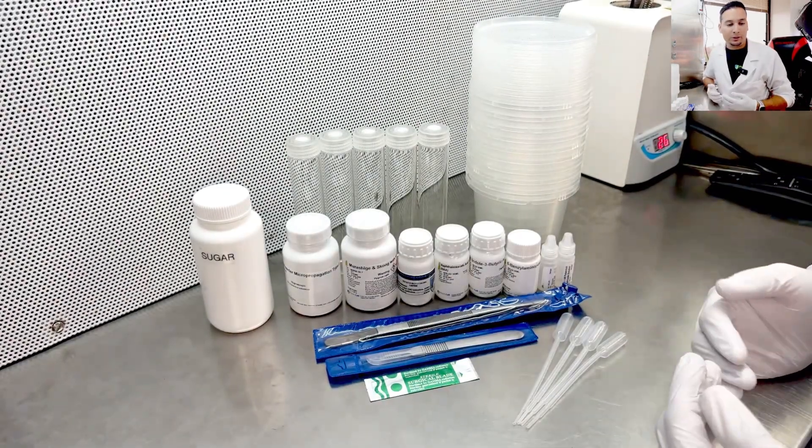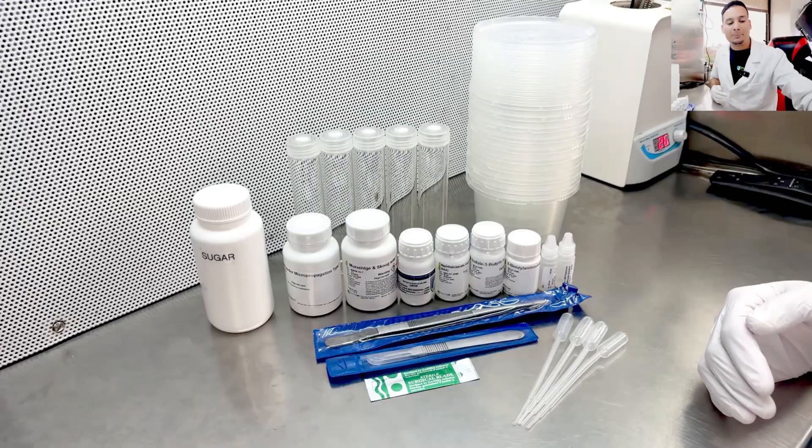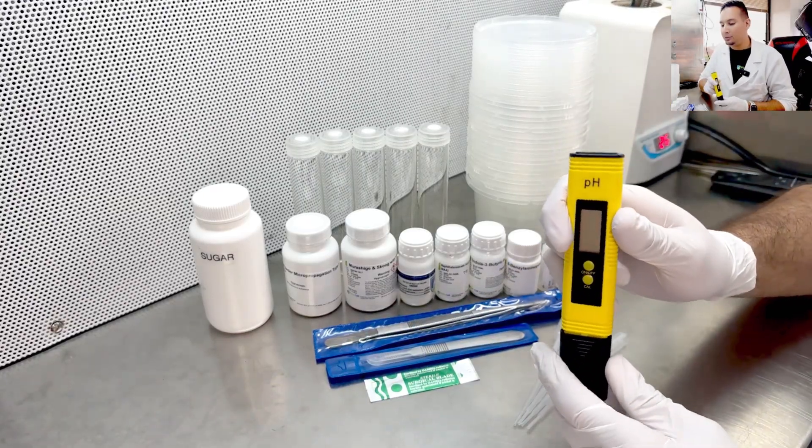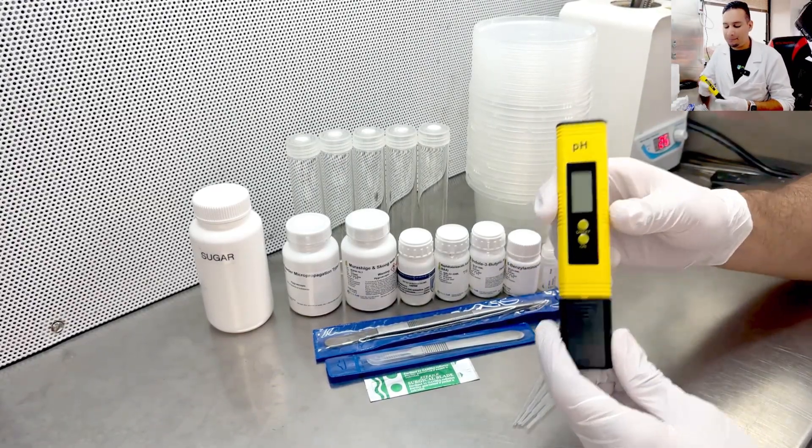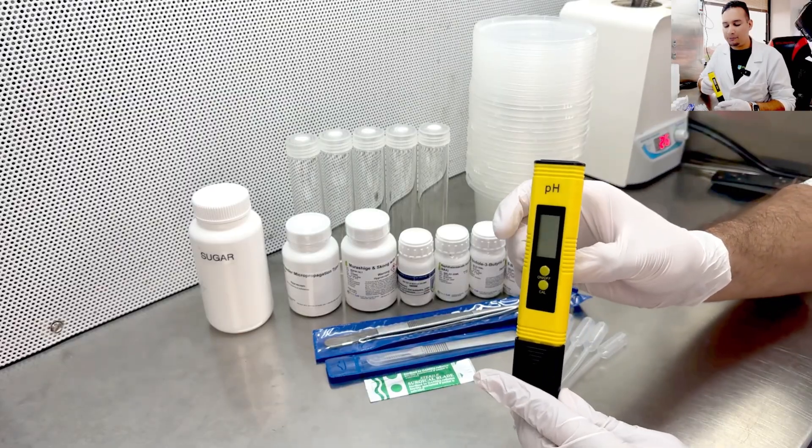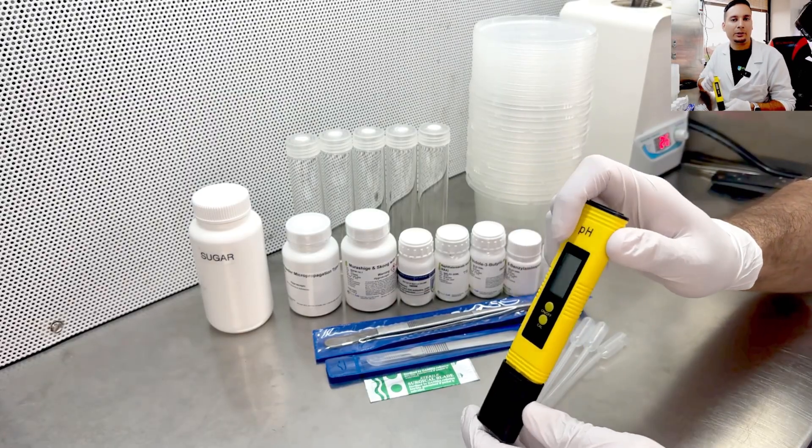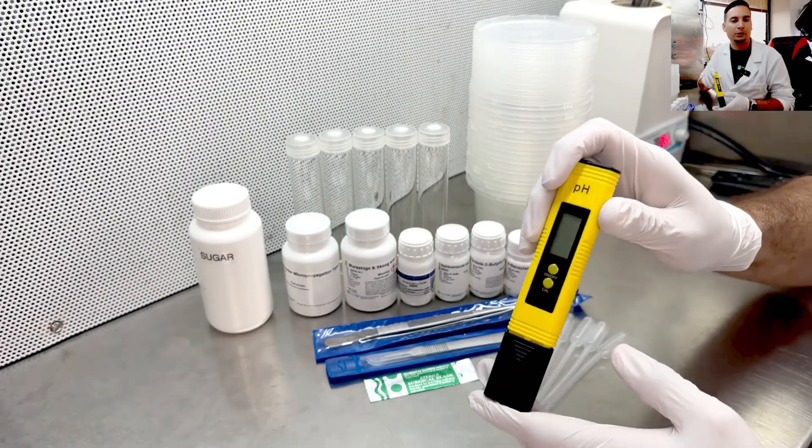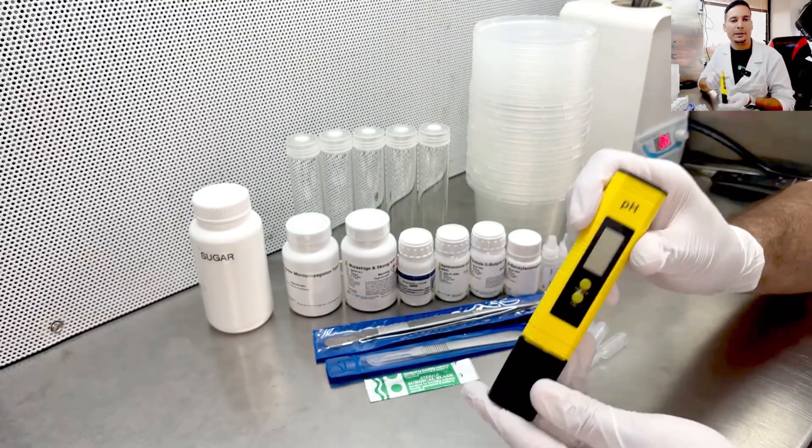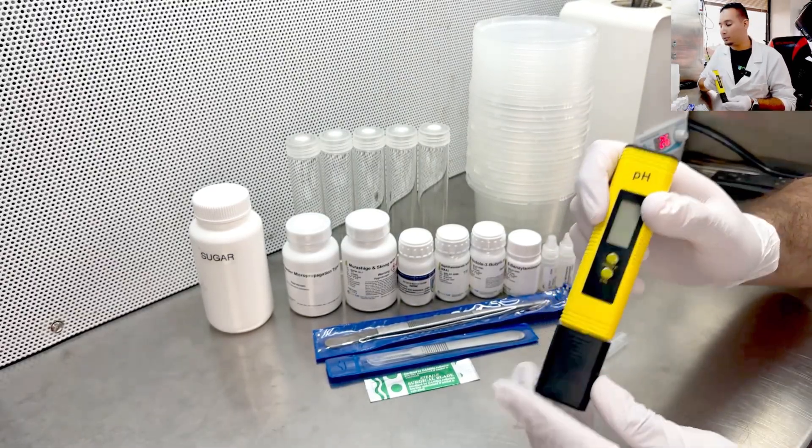Other things that you will need are a pH meter to calibrate the pH of the media. This pH meter is very affordable, it costs less than $10 online, so you can start with this one. Later on you can maybe upgrade to something a little better, but this is going to be good to get you started.